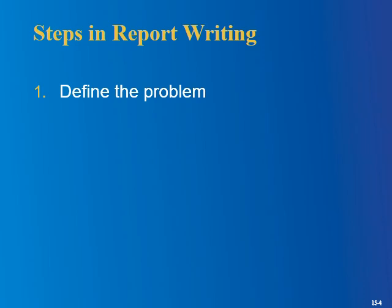What are the steps involved in writing a report? First, of course, is to define the problem the report addresses. They're not going to pay you to take the time and resources to write a report if there's no justification for it. Examples include a parking problem on campus, a drop in enrollment, or in the business world: sales going up or down, new technologies, legal issues — there's an infinite number of these.